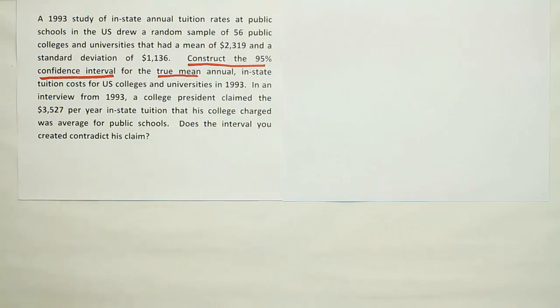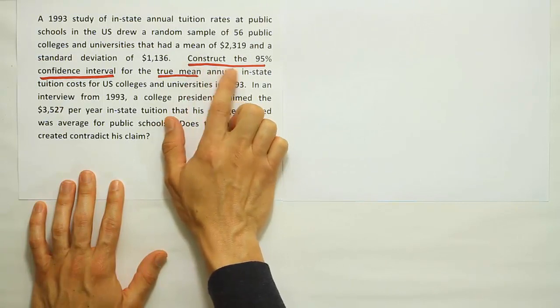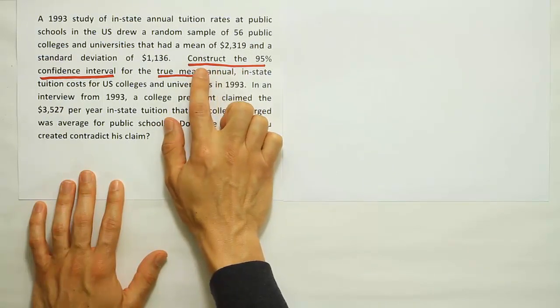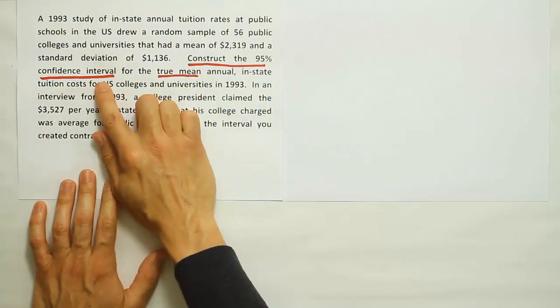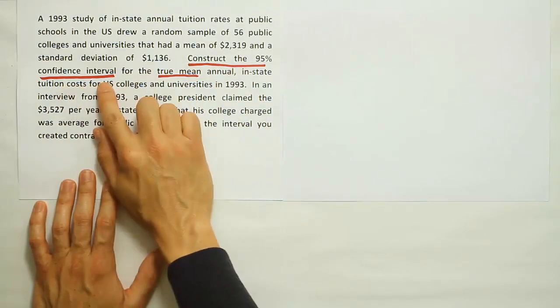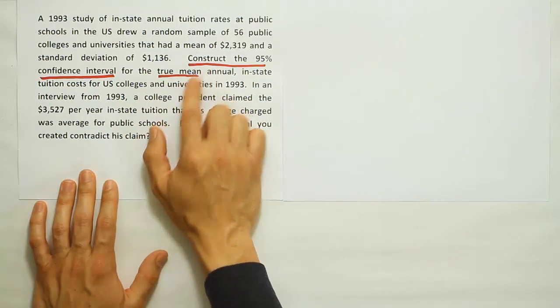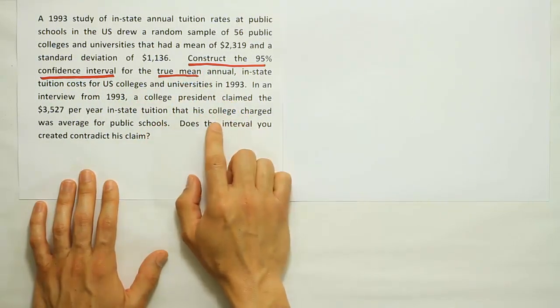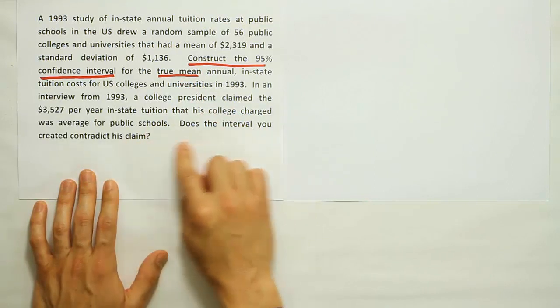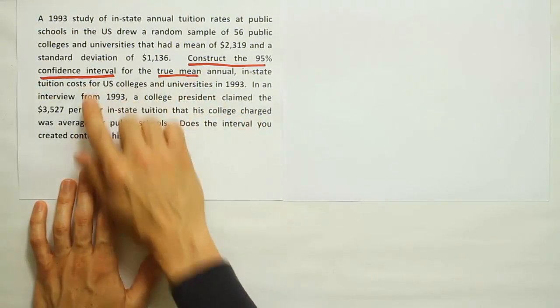So I've outlined some really common key phrases here. This is a very explicit phrase that tells us what we have to do. It says construct the 95% confidence interval for the true mean. So we know it's a 95% confidence interval that we have to create, and we know it's for the mean. There's no mystery as to what we have to do. At the end, we're going to answer a quick question that involves the interpretation of the interval we just created. But let's start with constructing the confidence interval.